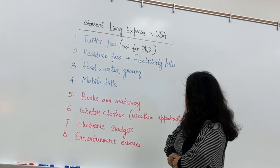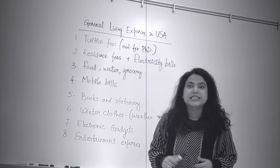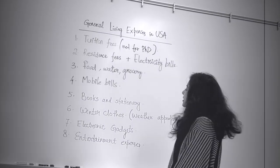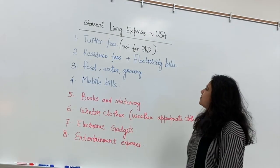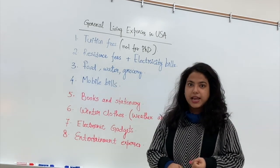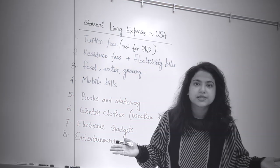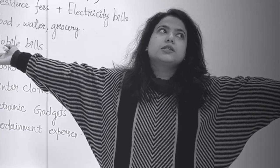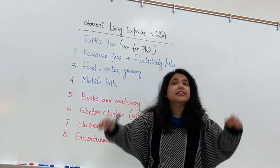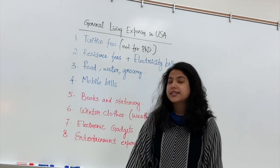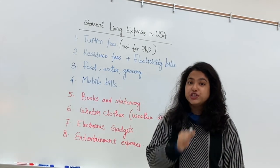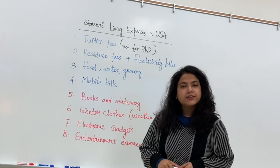The second point is residence fees and electricity bills — the place where you are going to stay in the United States. Residence fees are very essential. If you're staying on campus versus off campus, the cost varies a lot. Staying on campus is more costly, which is the case for almost all parts of the United States, while staying off campus is much cheaper and more economical.